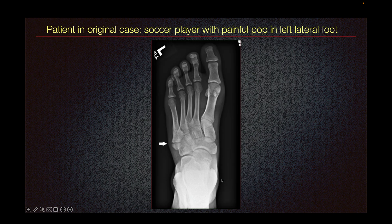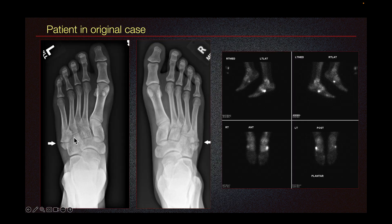Let's go back to our original case. We have an avulsion fracture of the fifth metatarsal base because this involves the tarso-metatarsal articulation. This patient also had an avulsion fracture in the other foot, and looking at a bone scan — which is a type of nuclear medicine study — we see increased radiotracer uptake at the fifth metatarsal base, corresponding with our avulsion fractures.